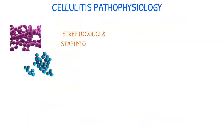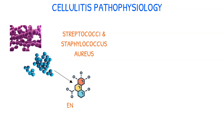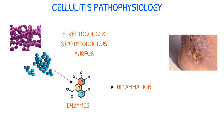Streptococcus and Staphylococcus aureus are the most frequent causes of cellulitis. These bacteria create enzymes that cause severe inflammation when they enter the subcutaneous tissues. As a result, the infected area develops diffuse borders and becomes hot, sensitive, red, and swollen.